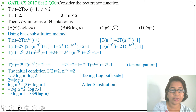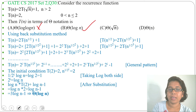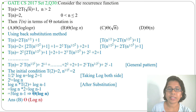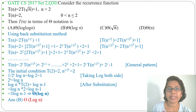Now check the options: Option A, Θ(log log n) — Wrong. Option B, Θ(log n) — Correct. Option C, Θ(√n) — Wrong. Option D, Θ(n) — Wrong. So the answer is Option B, Θ(log n). I already discussed the backward substitution method; just go through that lecture and you can easily solve this question. If this lecture is helpful, please like and subscribe, and let me know if there is any doubt through the comments. Thank you.